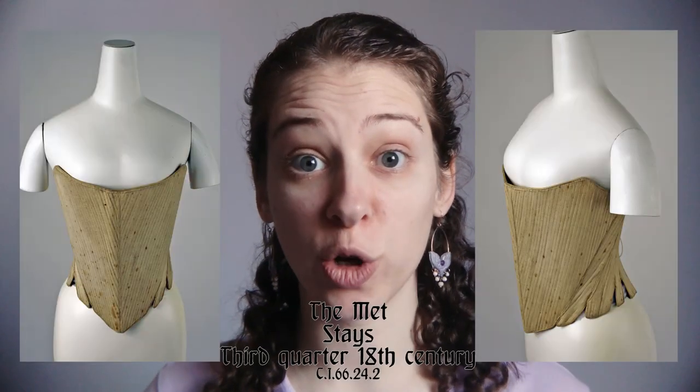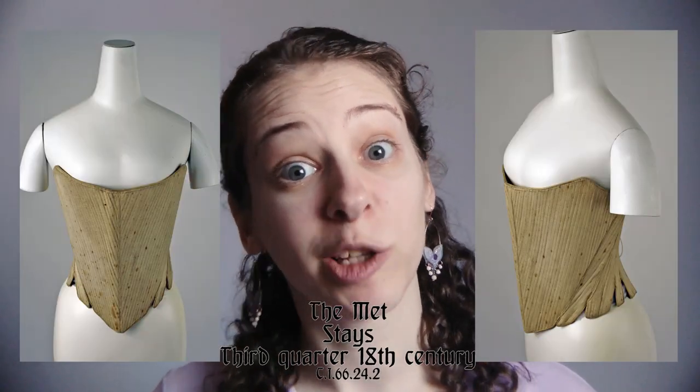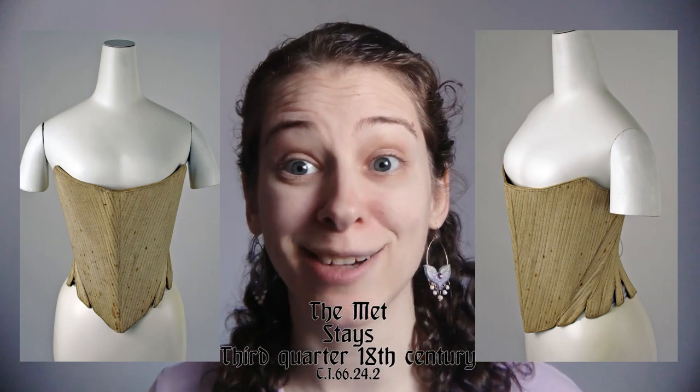Throughout most of the 18th century the cone shape was in fashion. The stays were smaller at the waist and bigger at the bust, but the stays were mostly straight up and down, though the pattern pieces themselves were not cut on straight lines.